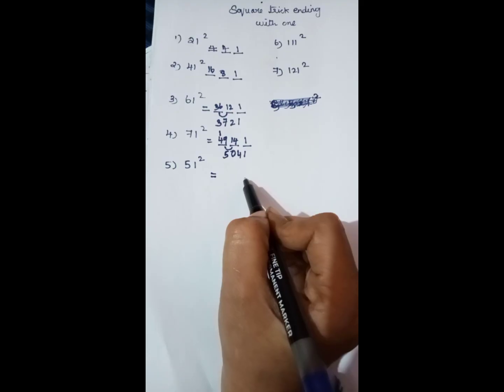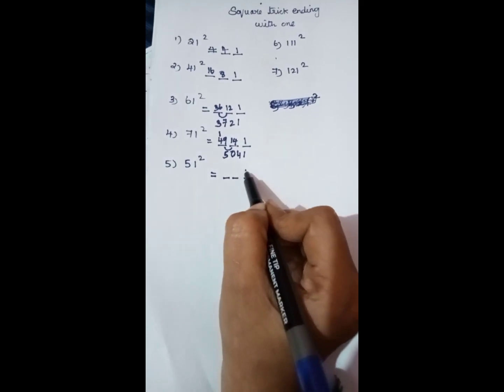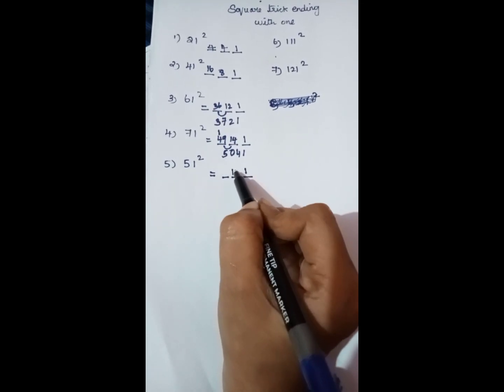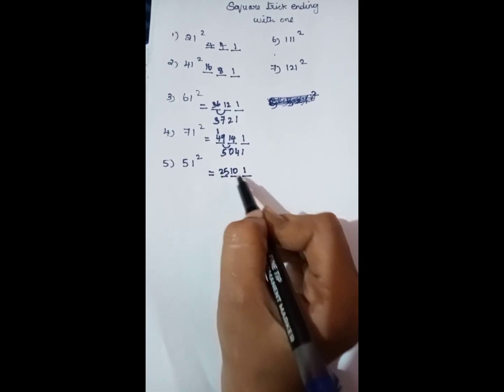Next, 51 square. Write 1 as it is. 1 square is 1. Double the 5 to get 10. Square the 5 to get 25.